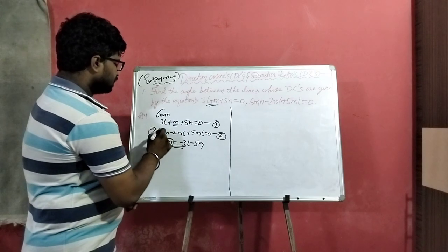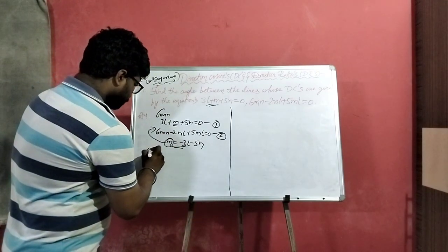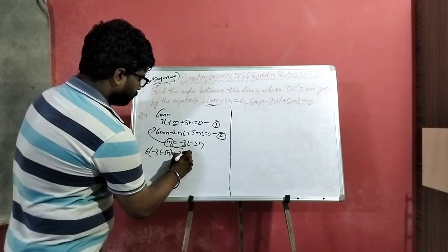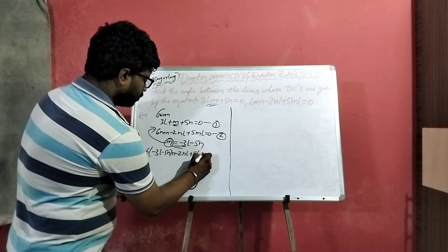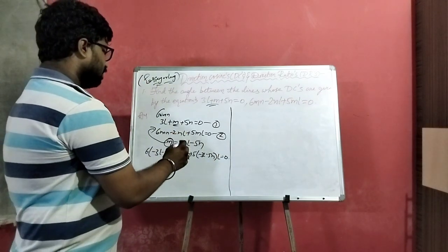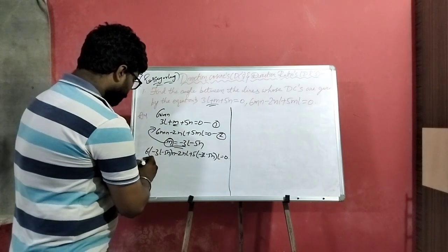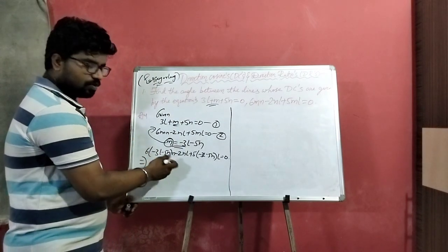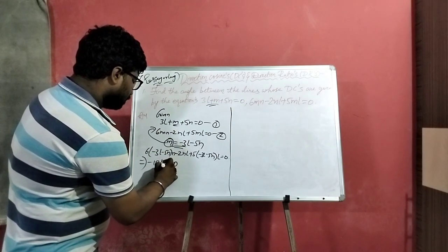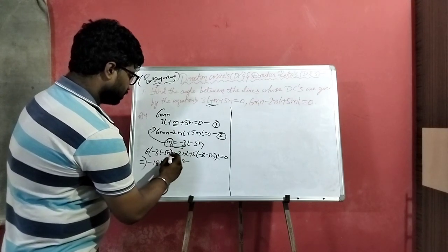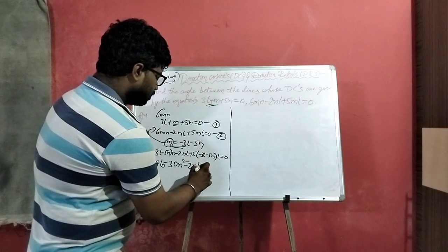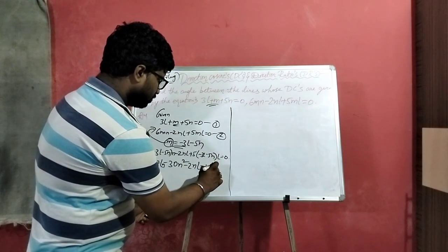M is equal to second equation substitute. Substitute M value. Now, the first product is minus 18L squared plus LN and minus 30N squared minus 2NL